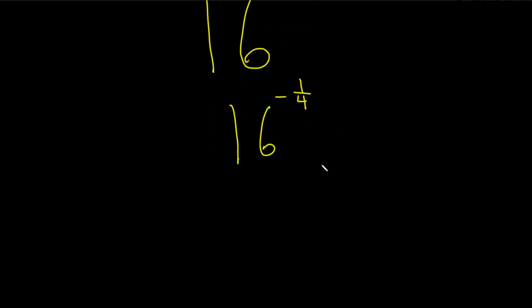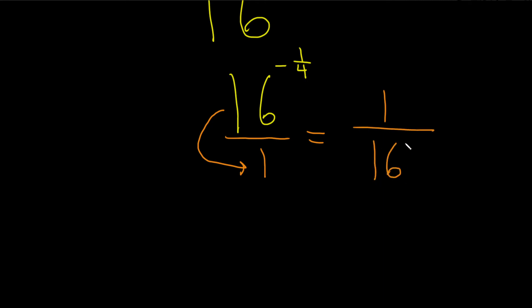And now let's try to get rid of this negative. So to do that, realize that this is really over 1. And so what we can do is we can take this and bring it downstairs. And when you do that, you have a 1 upstairs, and then it becomes 16 to the 1 over 4, right? Because the exponent changes sign when you bring it down.